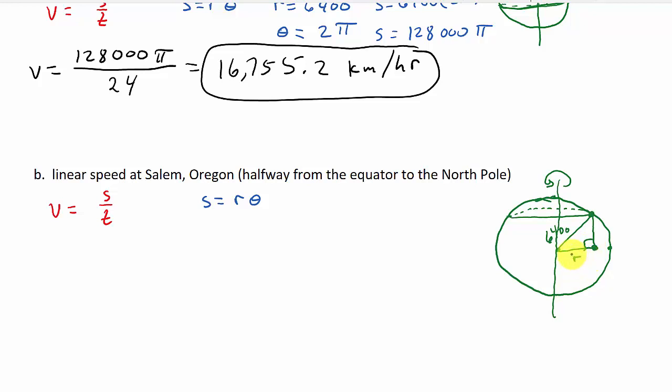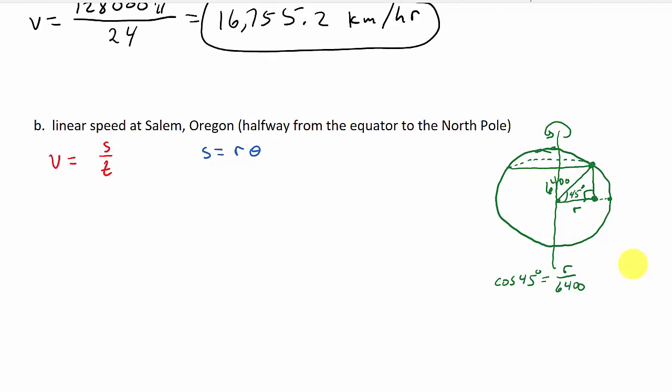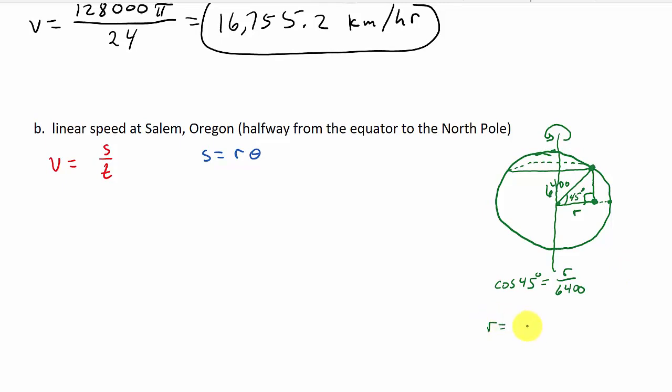So we know this is 6400. This would be a right angle and we need R. We know that the axis and the equator, that would be 90 degrees. And if it says this point's halfway between this, we get theta is 45 degrees. So we have this angle here. We know the hypotenuse and we're looking for R, which is the side adjacent. So we know that cosine 45 is equal to adjacent over hypotenuse. And so we've got the radius is 6400 times cosine 45 degrees.